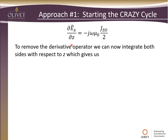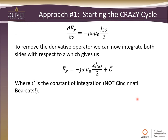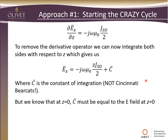We still have a derivative here — a differential equation — so to remove the derivative operator, we integrate both sides with respect to z. The left-hand side just gives us E_x. The right-hand side, which is constant in terms of z, just gives us a z term, plus a constant of integration — indicated by C with a line over the top. Now, at z = 0 this constant of integration must equal the E field, since the z term drops out. So we can replace that constant with the E field evaluated at z = 0.